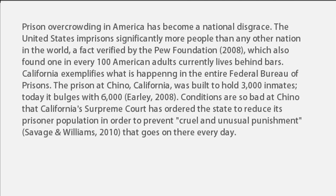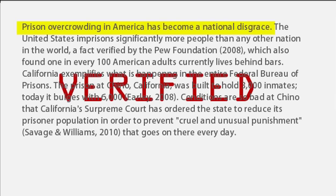Did the author of this paragraph use objective evidence to support the claim that "prison overcrowding in America has become a national disgrace"? Yes — the facts presented about America's prisons provide objective, verifiable evidence of the claim that the situation is disgraceful. From this starting point, a successful paper will continue to present and discuss evidence justifying why this situation should be viewed as disgraceful, as well as critically consider counter-arguments.